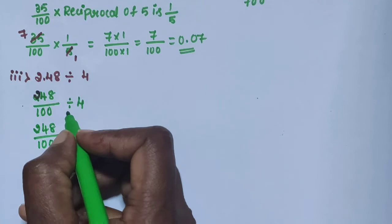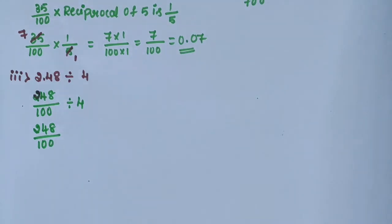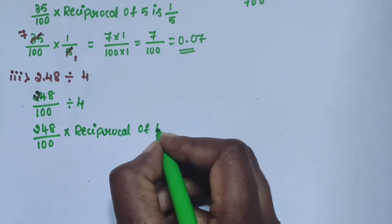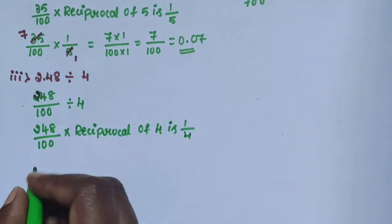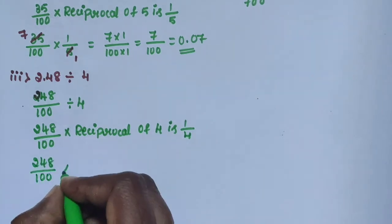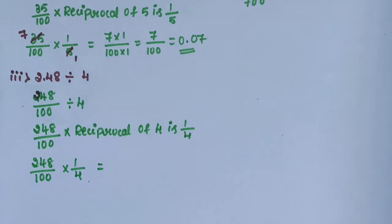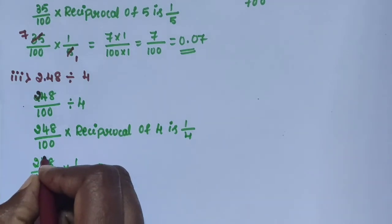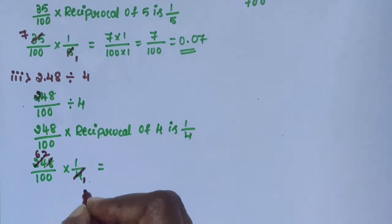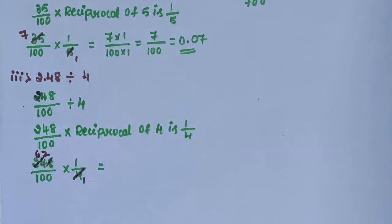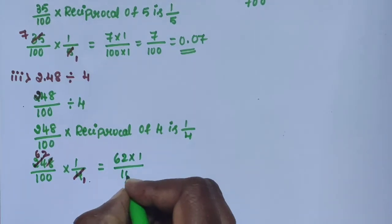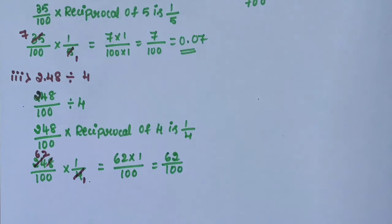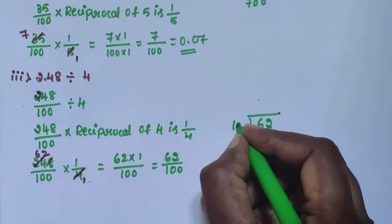248 divided by 100, divided by 4. The division sign is removed using a reciprocal: 248 divided by 100 into 1 by 4. Simplify: 4 ones are 4, 4 sixes are 24, 4 sixty-twos are 248. Remaining is 62 into 1, divided by 100, giving 62 divided by 100.